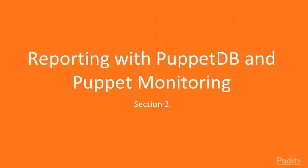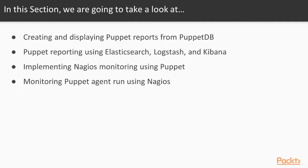In this section, we will learn about reporting with PuppetDB and Puppet monitoring. We will first understand the different PuppetDB API endpoints and look at how we can query PuppetDB and create customized reports. We will then use Puppet to create a customized dashboard using Elasticsearch, Logstash, and Kibana, and then we will use a Logstash reporter module to send Puppet reports to our new dashboard.